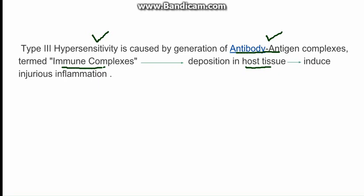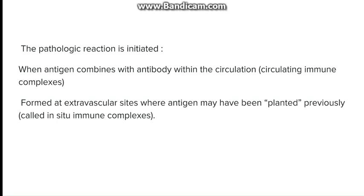We will understand it better by understanding the pathogenesis and various examples associated. Going to the pathogenesis, it can be divided into two types on the basis of whether the antigen-antibody complex is forming within the circulation. This type of immune complex is known as the circulating immune complex.